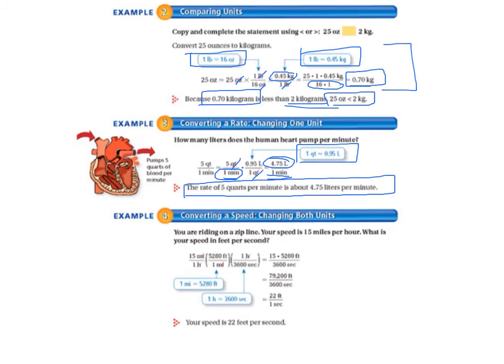Finally, example four, we are converting a speed, changing both units. So stay with me here. You are riding on a zip line. Your speed is 15 miles per hour. What is your speed in feet per second? So we're changing the miles to feet, and we're changing the hours to seconds.